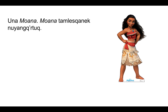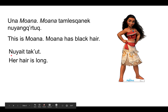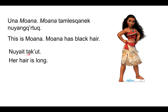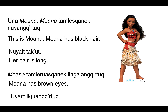Una, Mawana. Mawana tamleskanak Nuyankhtok. Nuyayt takkut. Takkut is a new vocab word. And I could say that her hair — this says her hair is long. I could say she has long hair, but I'm choosing to use a different sentence structure. Mawana tamlekhwaskanak Ingalankhtok. Uyamilkwanghtok.